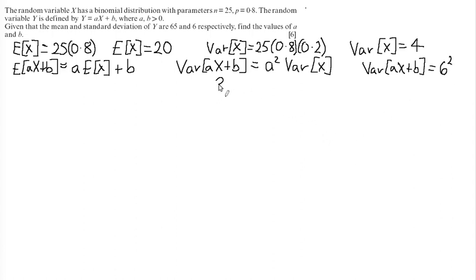If I put this back into my equation, we get 36 is equal to a squared times the variance of X, so 4a squared. I can now solve to find a. If I divide both sides by 4, I get 9 equals a squared.